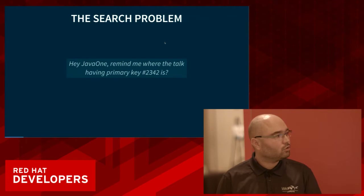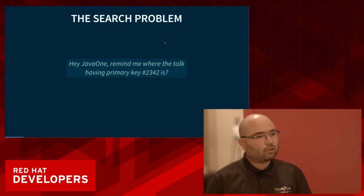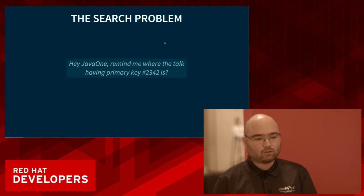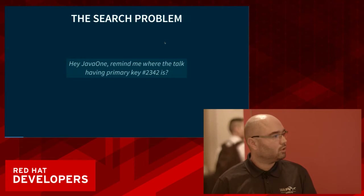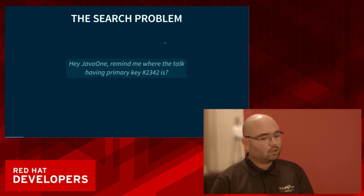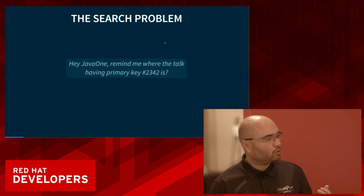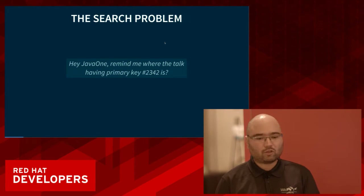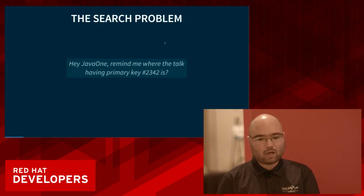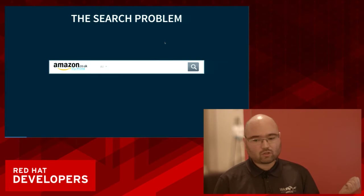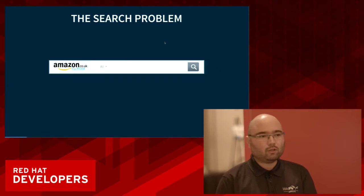To get straight onto the problem: if you are interacting with relational databases — which is mostly what the JPA standard is meant to address — you get problems like this. If you go to a website like JavaOne and you can't remember where your next talk is, the website can't ask you for the primary key of the document it needs to serve you. This is the kind of interaction you have with JPA and a relational database, but it really doesn't work for human interaction because people go by terms.